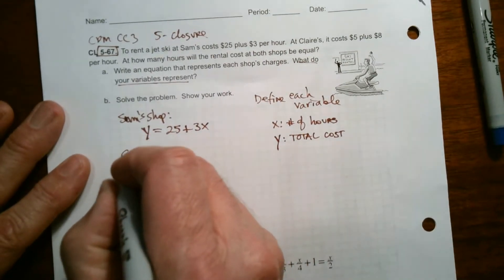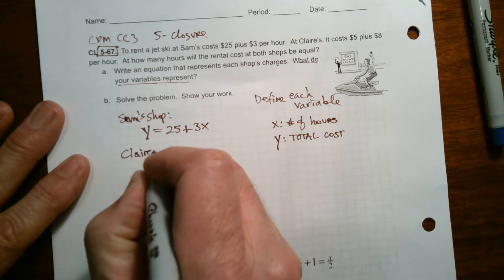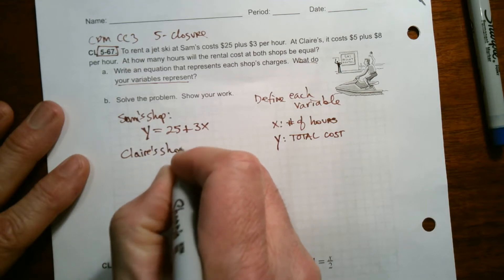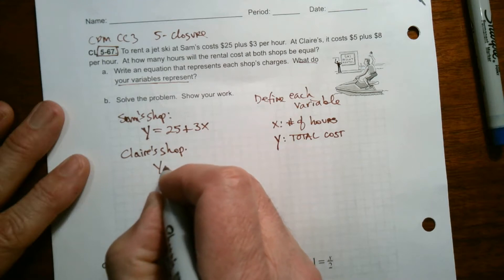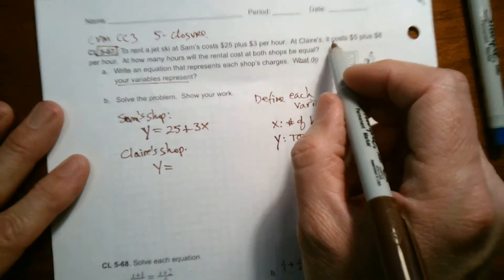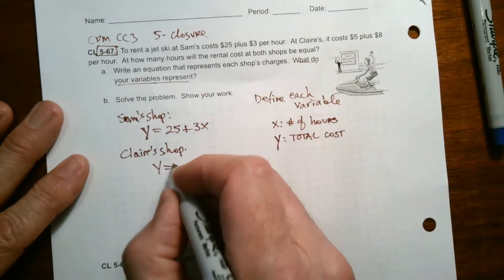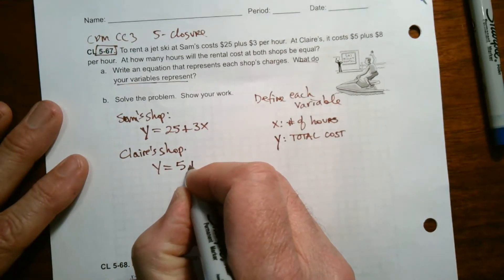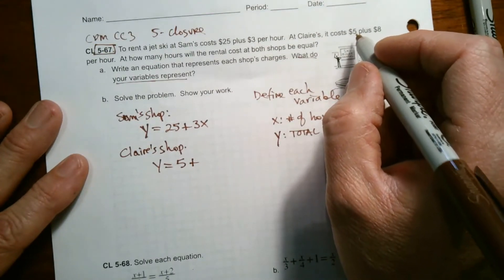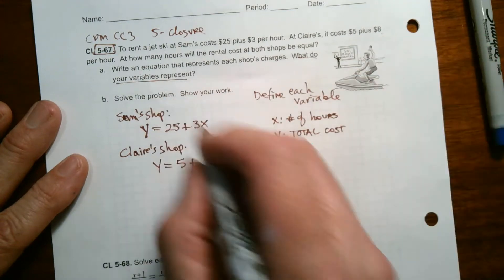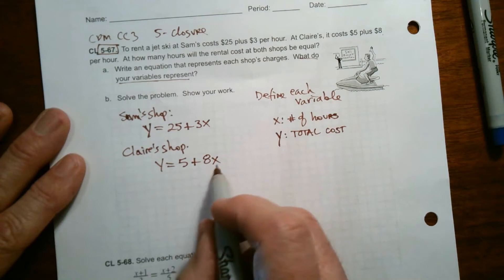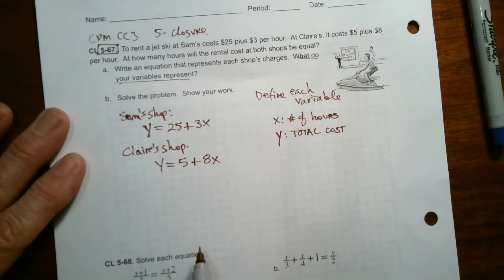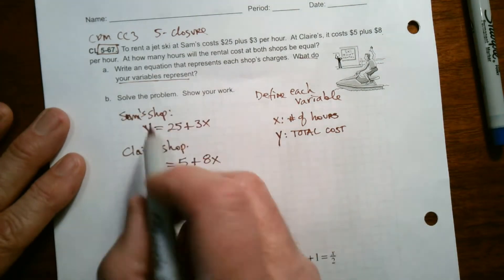And then for Claire's shop, again, total cost for Claire's shop Y equals, well, Claire says her costs are $5. So it's five plus, because that's always constant. That's the initial cost of five plus $8 per hour. So again, eight times the number of hours. So eight X, eight times X, X being the number of hours. So those are the two equations that represent.